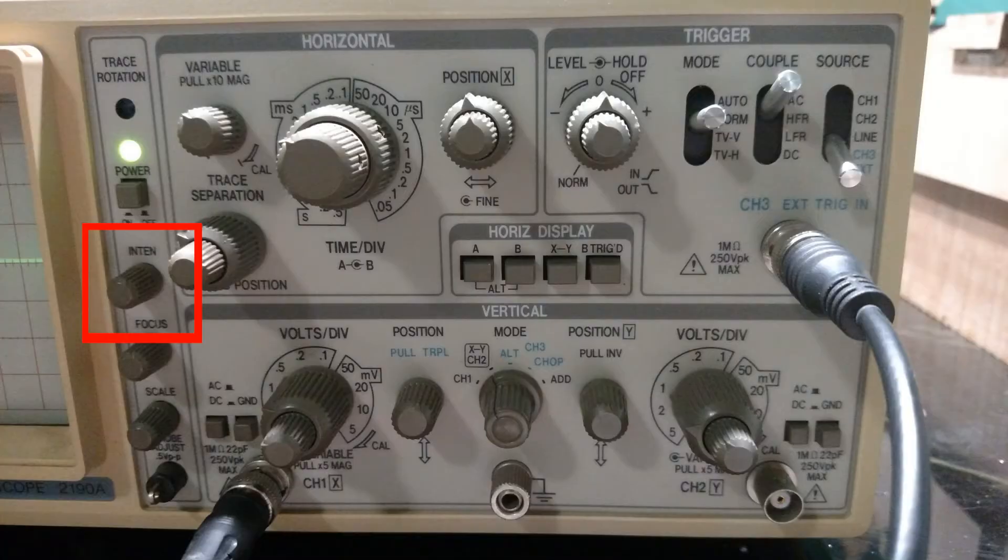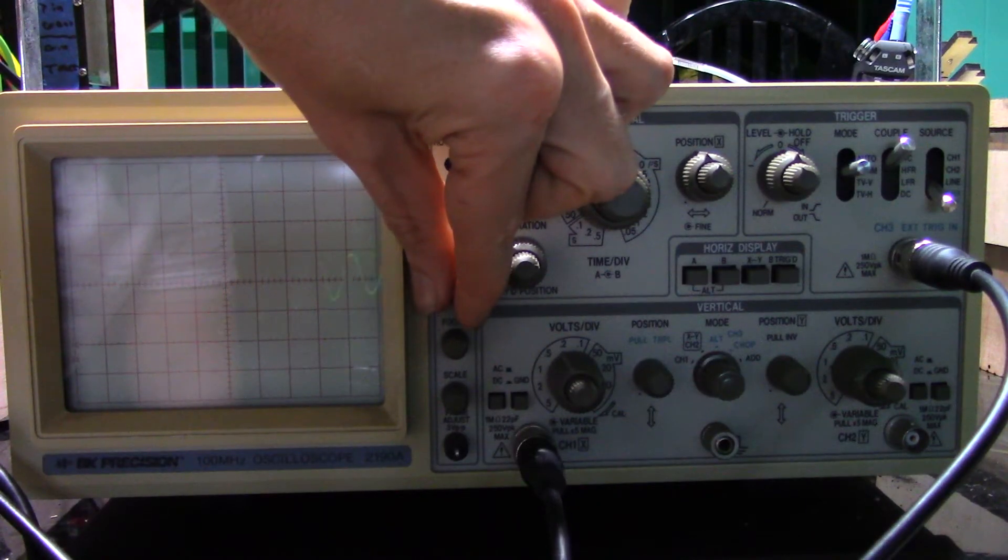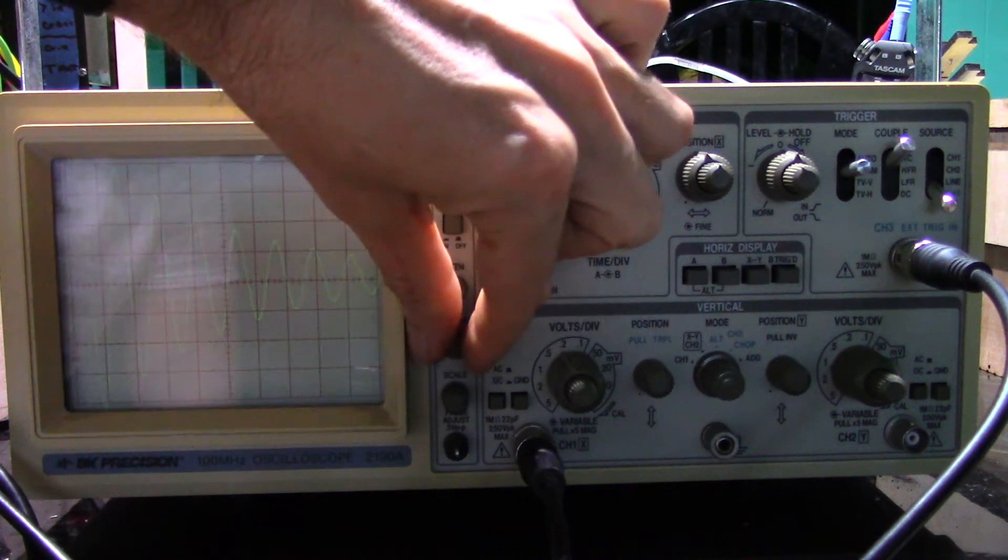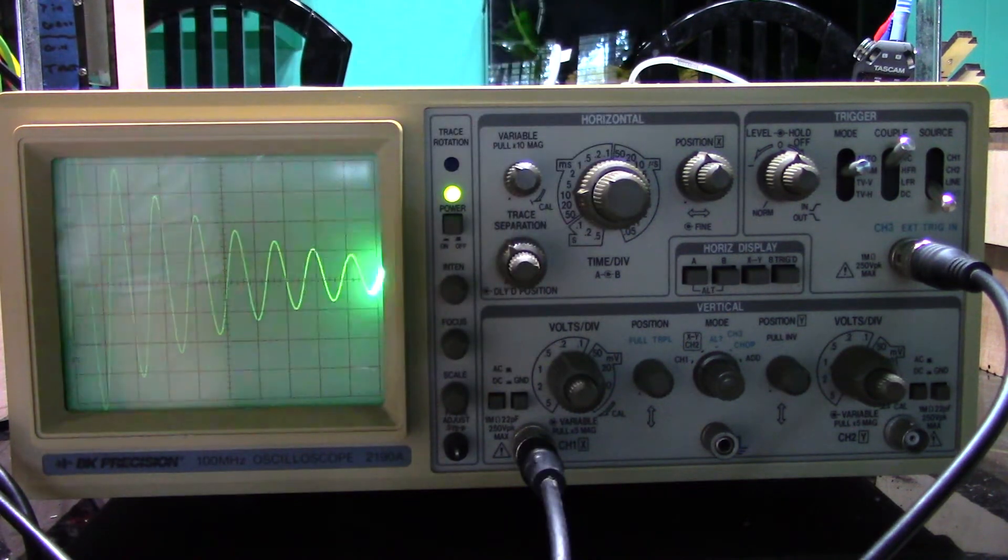Another thing that could be a hang up with older scopes like this is setting the intensity. This knob is useful for making different speed traces have the same brightness, but it can also be dialed all the way out making the trace invisible. So it's something to check if you're not getting a picture.